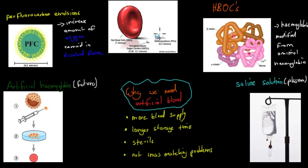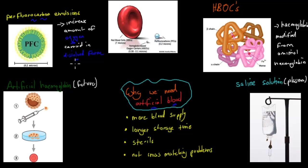I just briefly talked about the importance of hemoglobin and oxygen in our blood. The reason why we're working on artificial blood now is because some people don't have enough hemoglobin or different types of blood components, so we're working on things we can make in the lab. For example, we've got perfluorocarbon emulsions — what these do is increase the amount of oxygen dissolved inside blood, but the problem is they don't last very long and they're not as effective as normal hemoglobin.